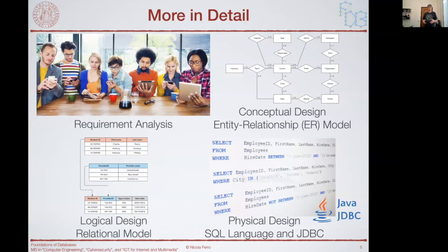The next step is logical design, which is based on the relational model — as you can see in the figure, these are basically linked tables. You will learn how to move from the conceptual model to the relational model and transform your conceptual schemas into relational schemas. Finally, the implementation and development part — the physical design — covers SQL, the Structured Query Language, and JDBC, Java Database Connectivity, which is the way to expose a database to the upper layers of an application.